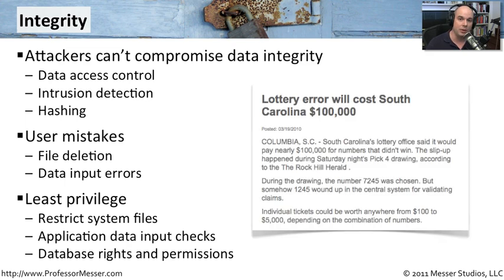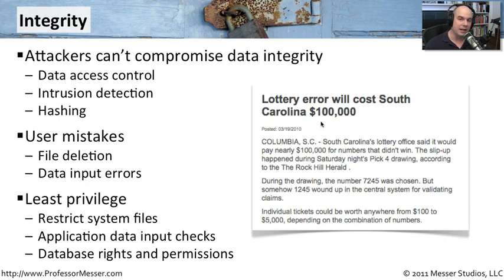This really comes into play with large systems. A good example is what happened in South Carolina. In their lottery office, the standard pick four drawing had the winning number 7245. Unfortunately, the system that validates tickets started validating 1245 as a winning ticket, and they ended up paying out $100,000 more than they should have. Somebody input a 1 instead of a 7, and now the entire system had a problem with the integrity of its data. There should have been checks and balances. I'll bet now in South Carolina there is a way to double-check whenever somebody inputs information into the validation system.